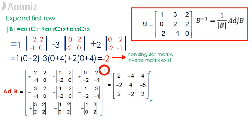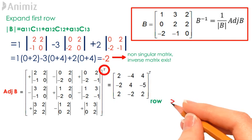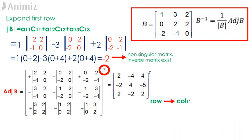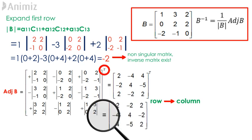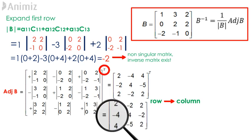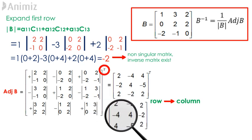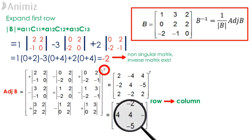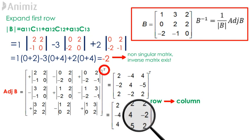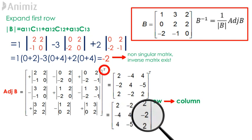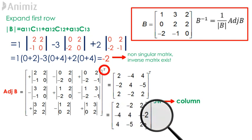The transpose of this matrix is found by interchanging the rows and columns, and that gives us the adjoined of matrix B to be 2, negative 2, 2, negative 4, 4, negative 2, 4, negative 5, 2.